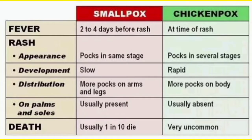What is the difference between smallpox and chickenpox? First, fever. In case of smallpox, the fever occurs two to four days before the rash — so first fever occurs, then comes the rash. But in case of chickenpox, the fever occurs at the time of the rash.